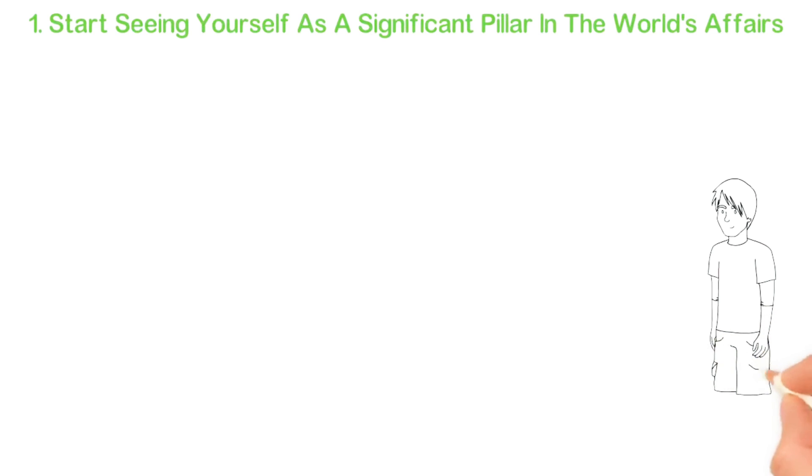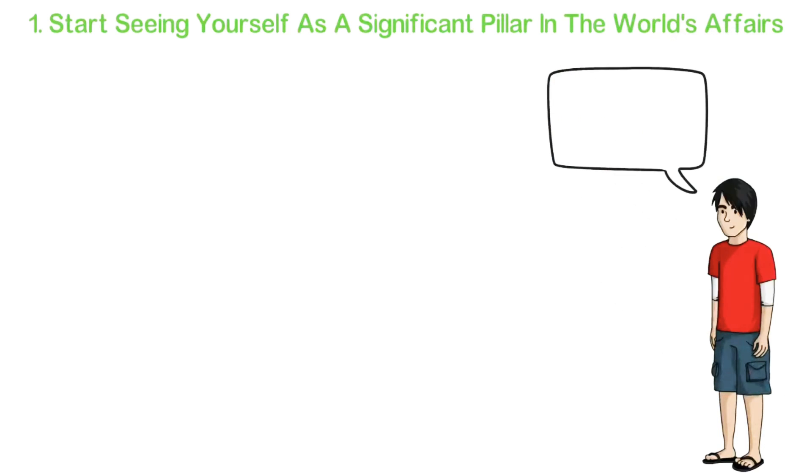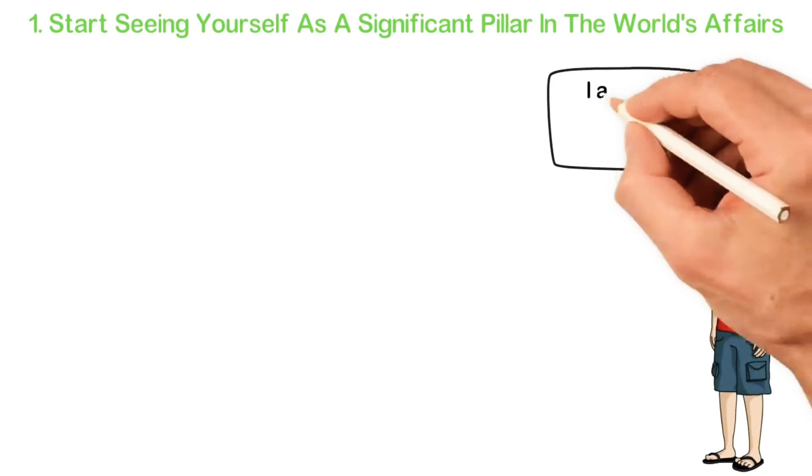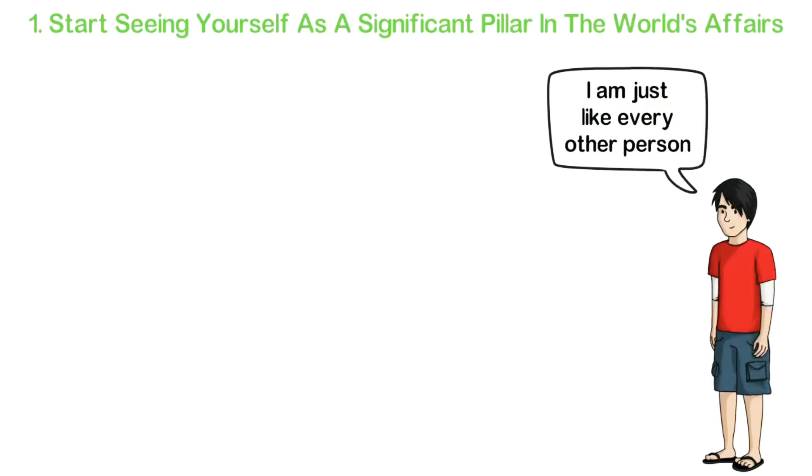The problem with this mindset is that you can't change the world except you can challenge the world. And you can't challenge the world if you think you're just one person out of 8 billion people. And if you can't challenge the world, you cannot build a great company because great companies are built by people who are crazy enough to think that everyone is wrong.